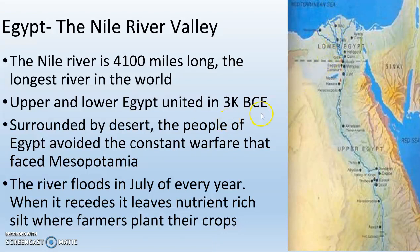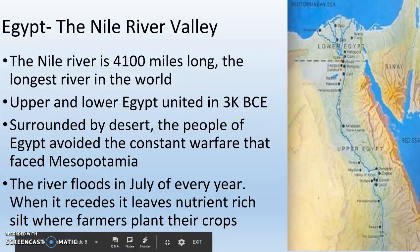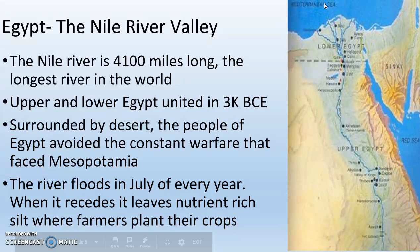Upper and lower Egypt are united in 3000 BCE. The great thing about Egypt is that it's surrounded by desert on multiple sides, with the Middle East to one side and the Mediterranean Sea to the other. So it's a pretty peaceful place. Unlike Mesopotamia where everybody's at war constantly, Egypt is fairly peaceful because it's surrounded by desert — nobody lives there.